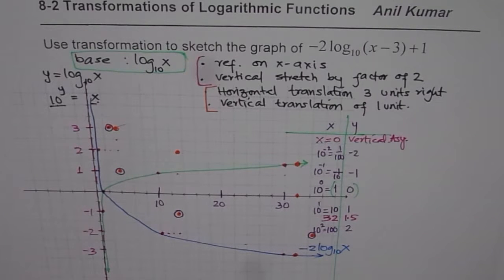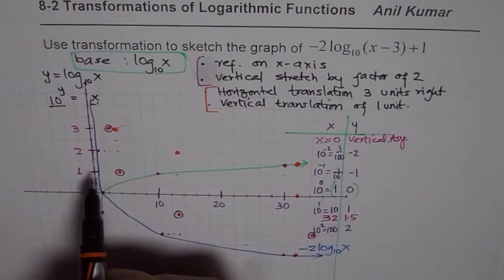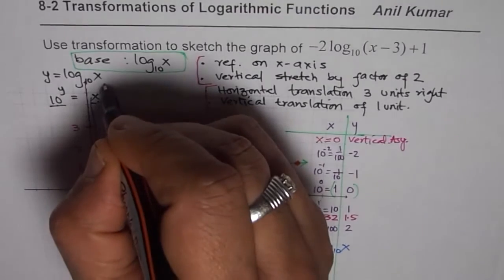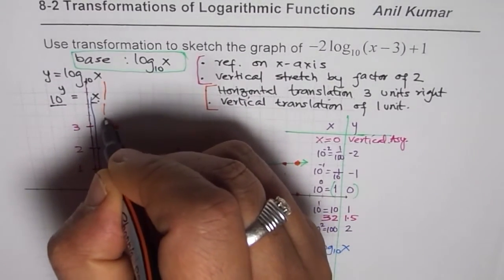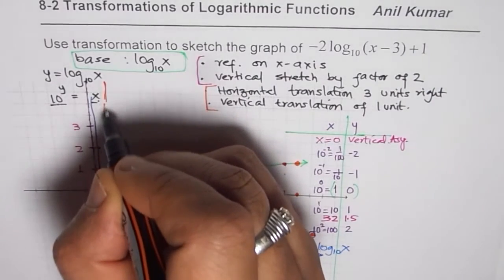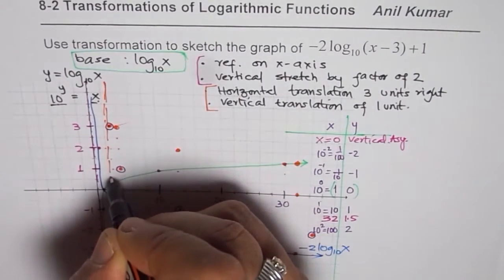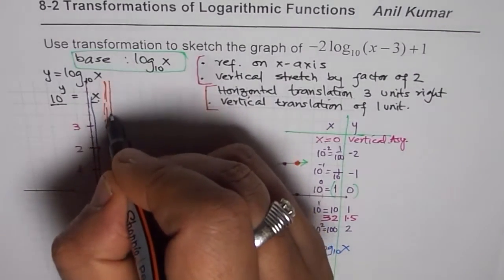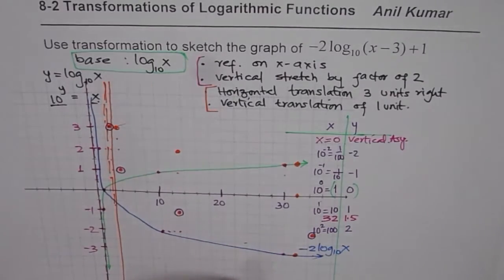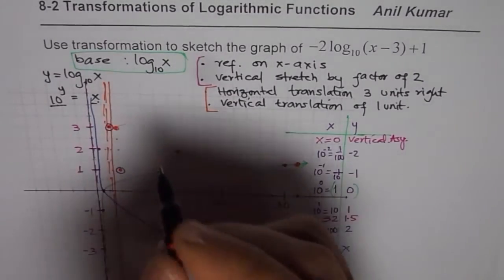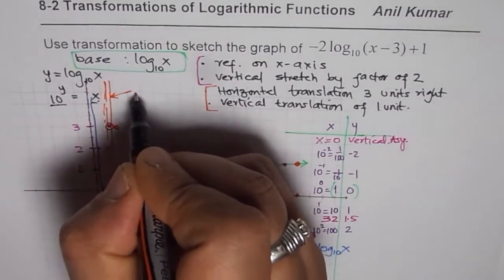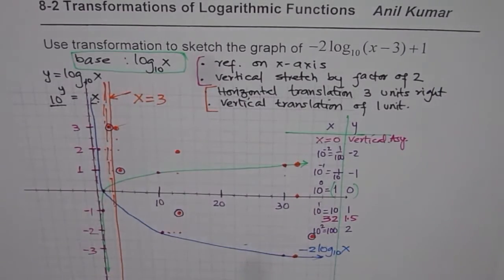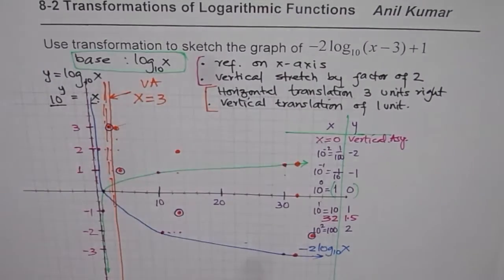Before sketching, let us draw the vertical asymptote. The vertical asymptote also moves by 3 units to the right, so it is now at x equals 3. We draw a solid vertical line at x equals 3 and label its equation as x equals 3. That is the vertical asymptote for our final function.